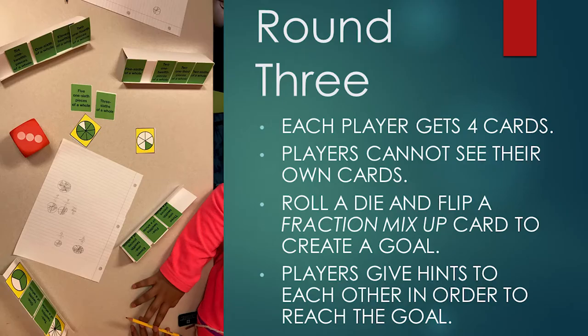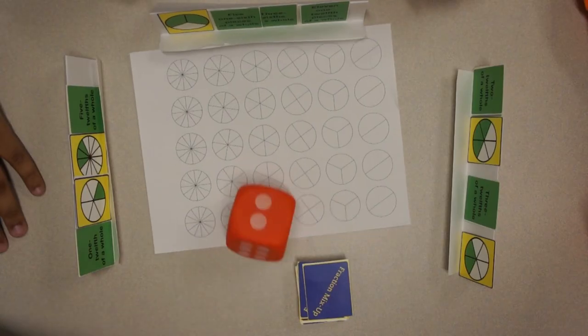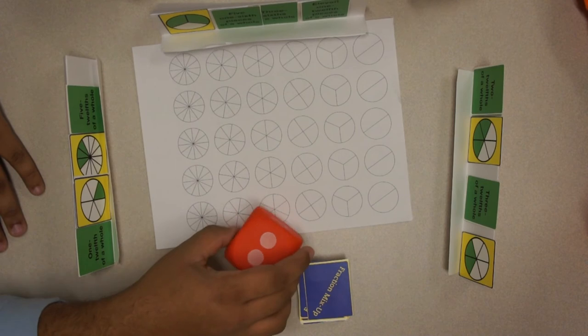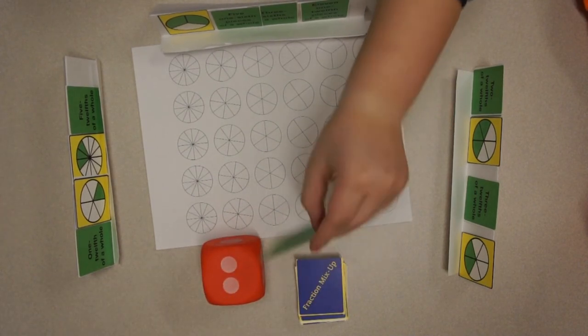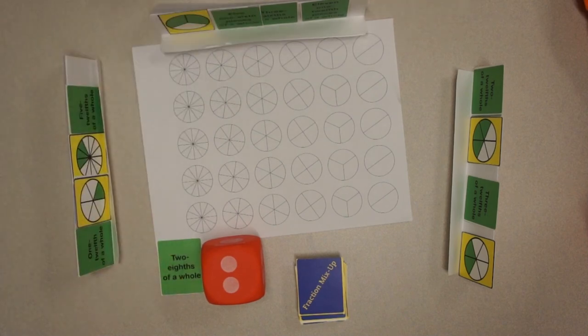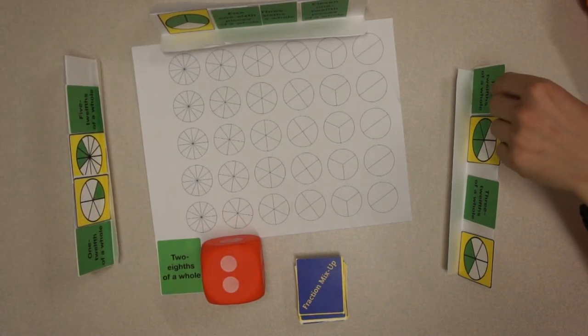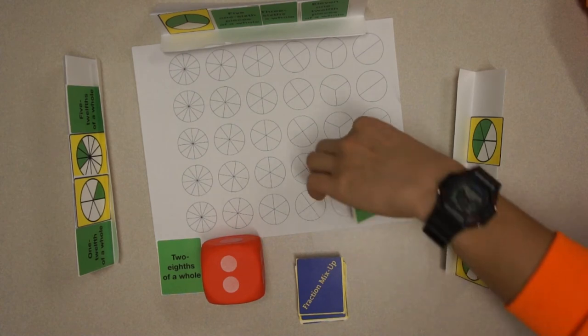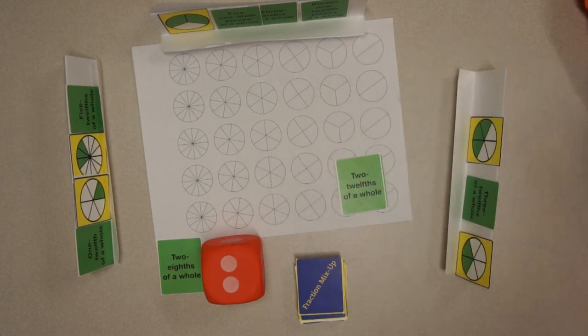In Round 3, players generate a random goal using a die and a fraction mix-up card. In this round, they cannot see their own cards and again must rely on the hints of others. Here, we can see a player rolling a two on the die and drawing a card that says two-eighths of a whole. Then the players play the game trying to achieve the goal of two and two-eighth pies.